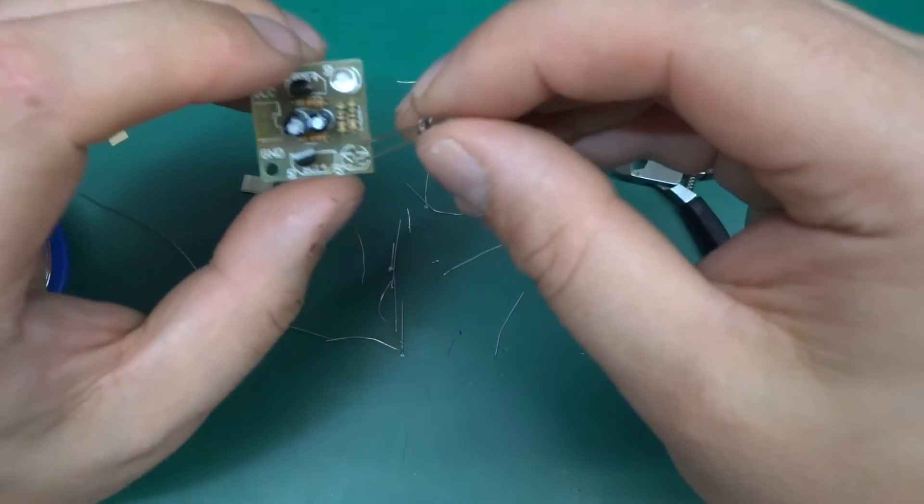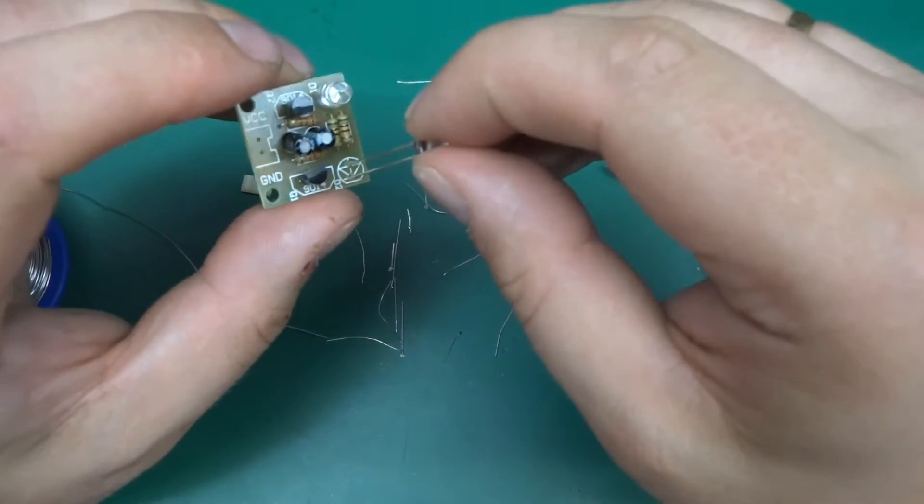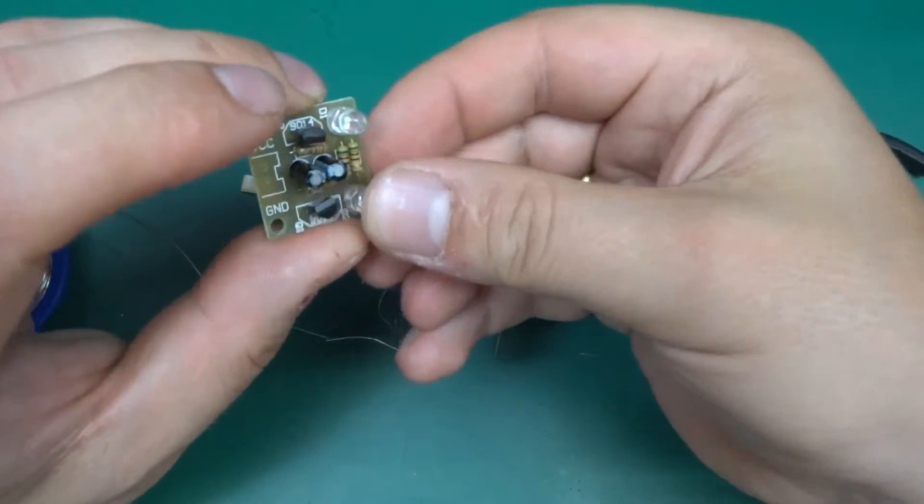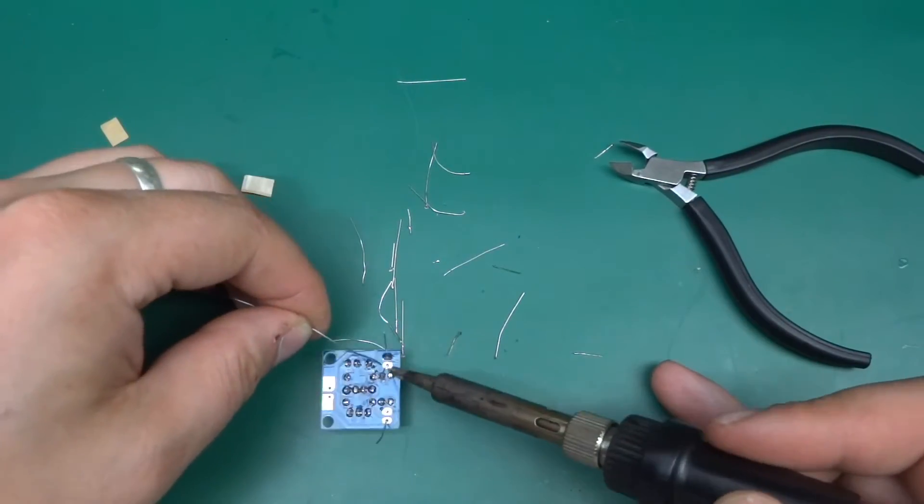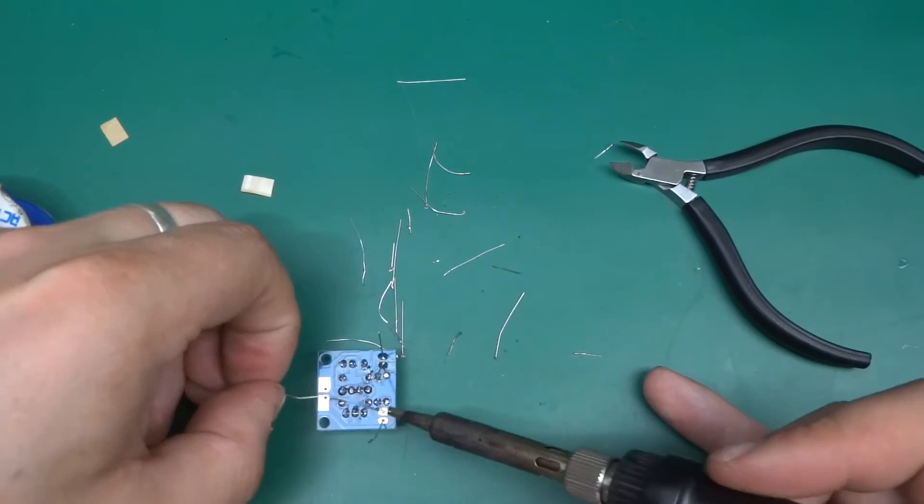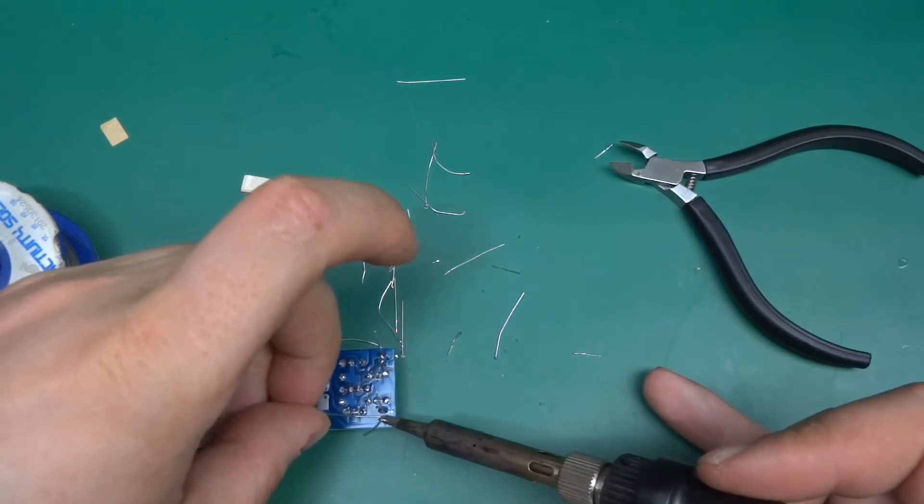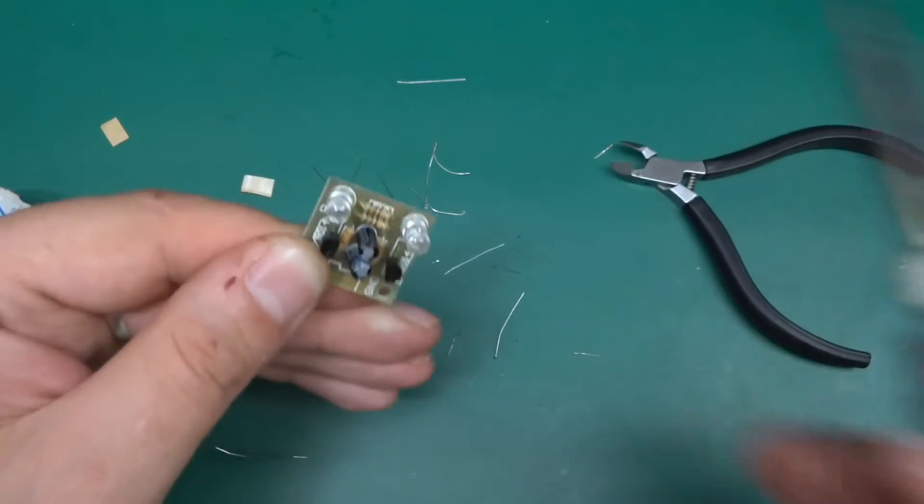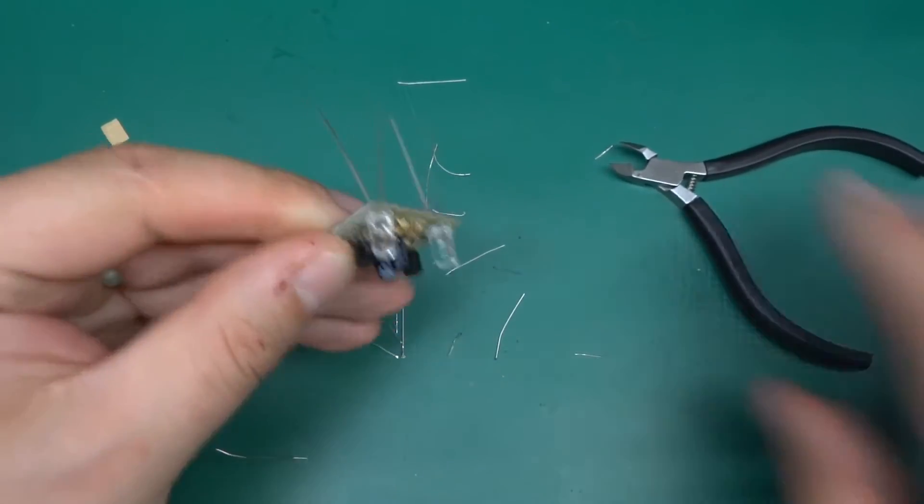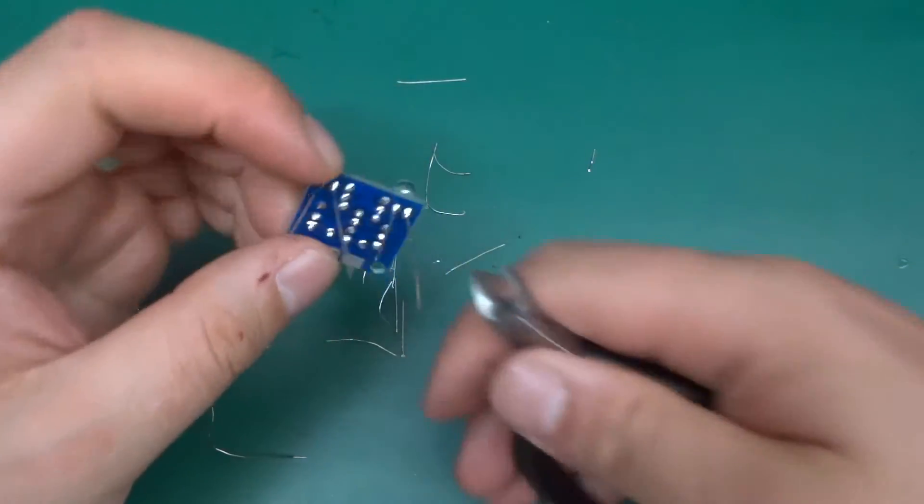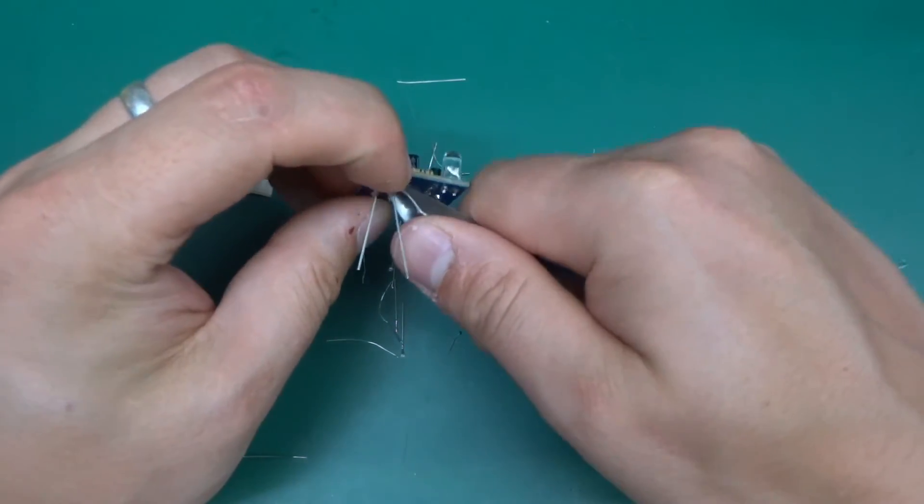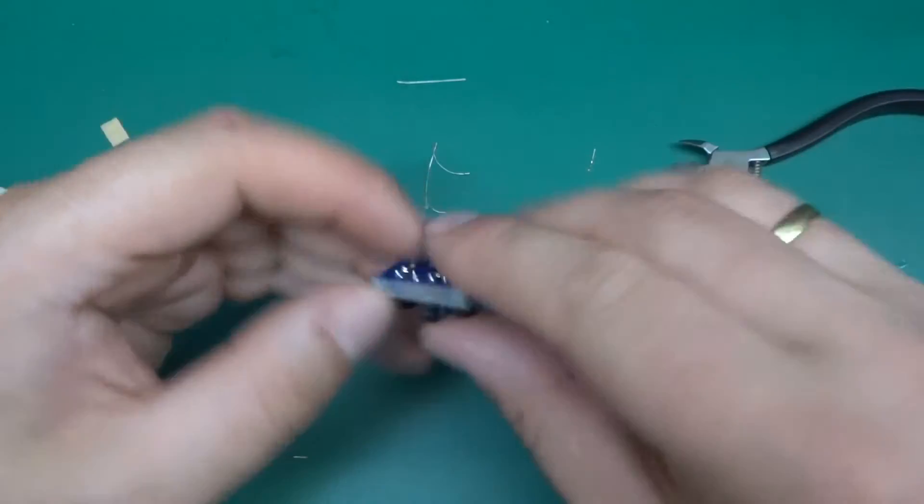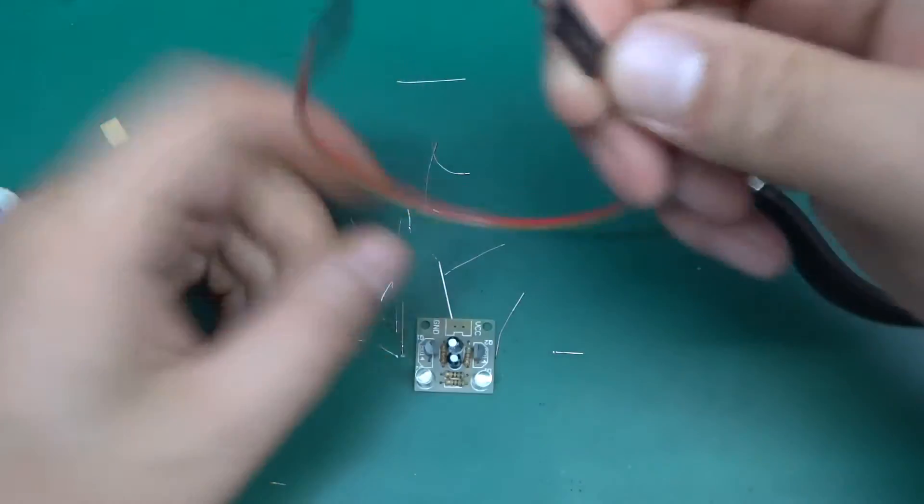Like so. Almost done. The last thing is the LEDs, and again, those are polarized. The longer leg is always the anode.